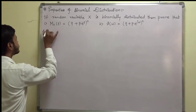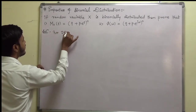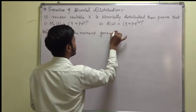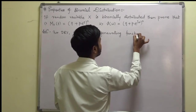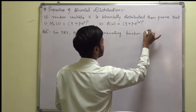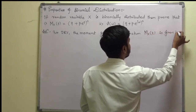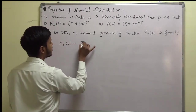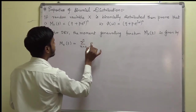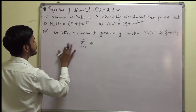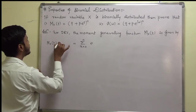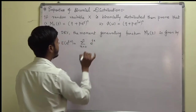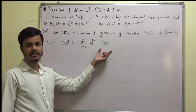So let us start. For a discrete random variable, the moment generating function M_X(t) is equal to the expectation of e^(tX), which is summation from x = 0 to n of e^(tx) into f(x), and we have the distribution for the binomial or Bernoulli's distribution.